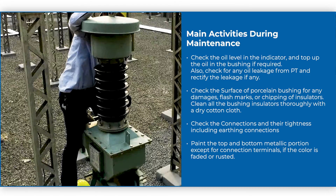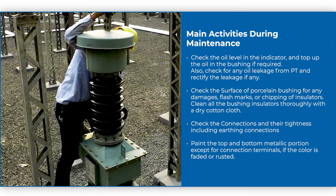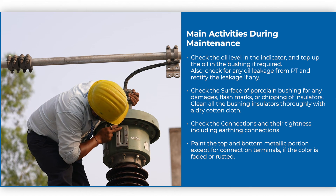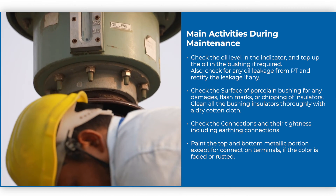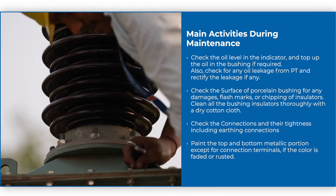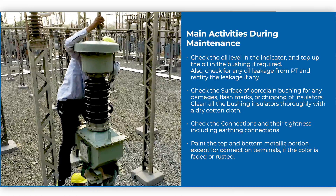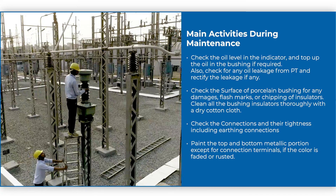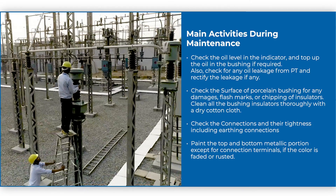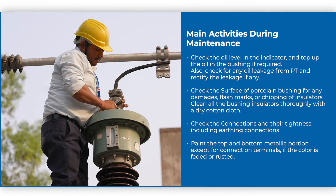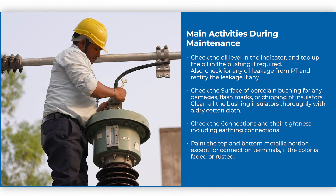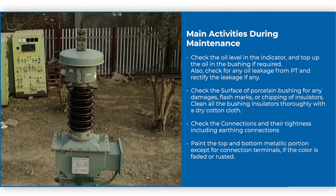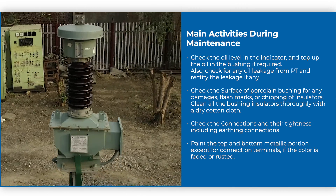There are many activities to be performed during maintenance. Check the oil level in the indicator and top up oil in the bushing if required. Check for any oil leakage from PT and rectify the leakage if any. Check the surface of porcelain bushing for any damages, flash marks, or chipping of insulators. Clean all the bushing insulators thoroughly with a dry cotton cloth. Check the connections and their tightness including earthing connections. Paint the top and bottom metallic portions except for connection terminals if the color is faded or rusted.